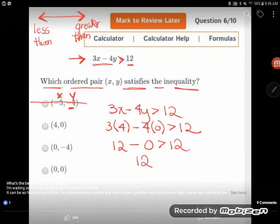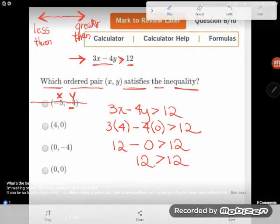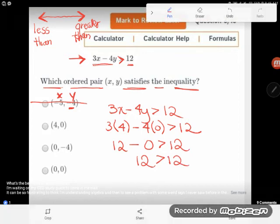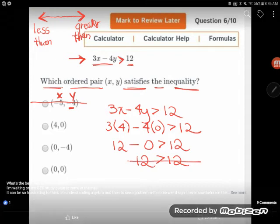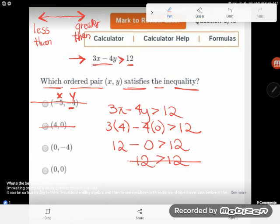And so I get this statement. Is 12 greater than 12? And no, sorry, because I have this strictly greater than sign. 12 is not greater than 12. So this is a lie. And so I cannot use that point either.